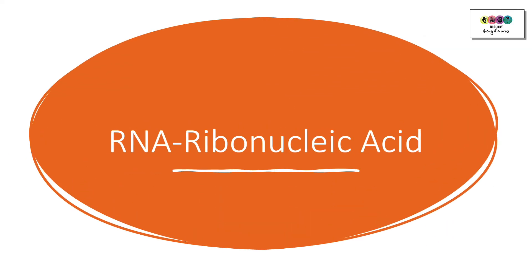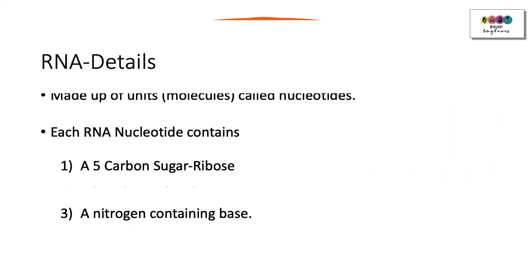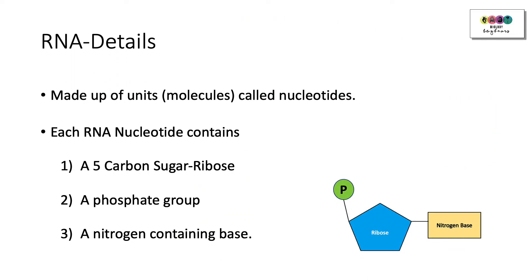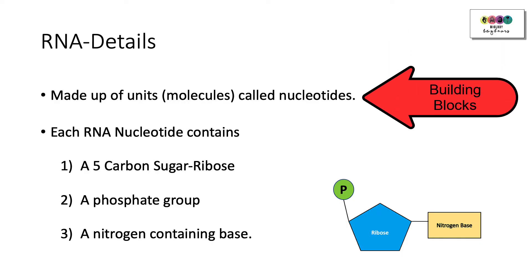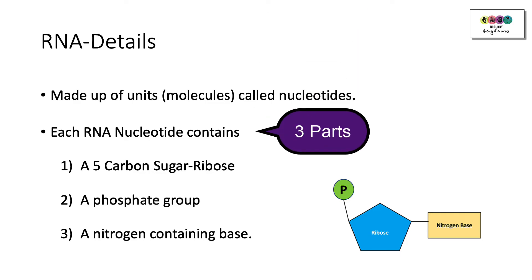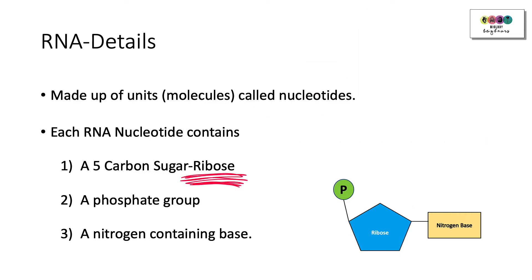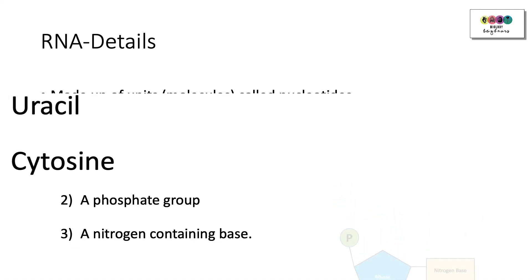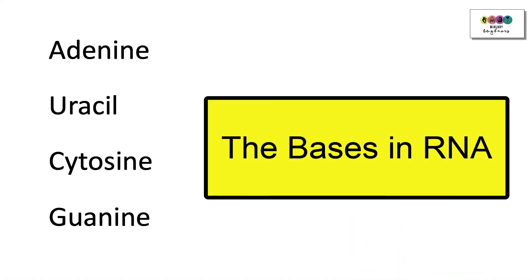Now let's move on to the other nucleic acid, RNA — know its full name, ribonucleic acid. RNA is made up of nucleotides as well. Each nucleotide in RNA also has three parts: a 5-carbon sugar (in this case it's ribose — that's a big difference), a phosphate group, and one of four nitrogen-containing bases. The bases in RNA are adenine, uracil, cytosine, and guanine. The big difference is that there is no thymine — instead of thymine, there is uracil in RNA.